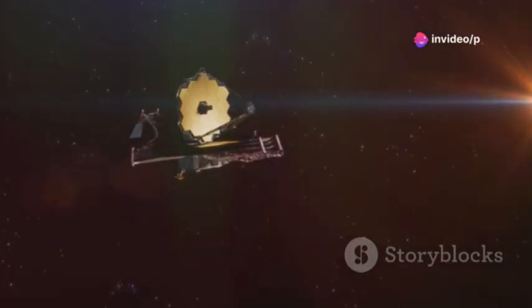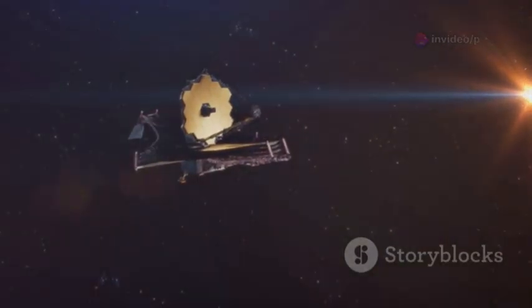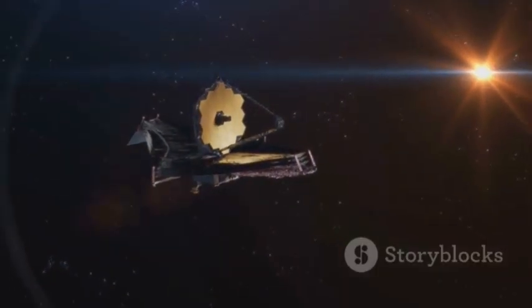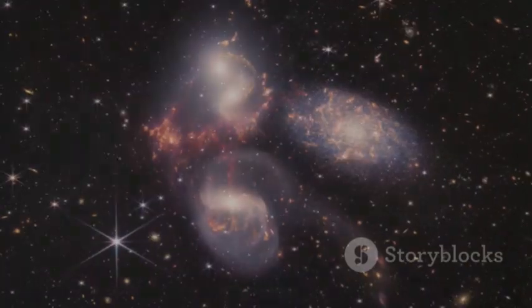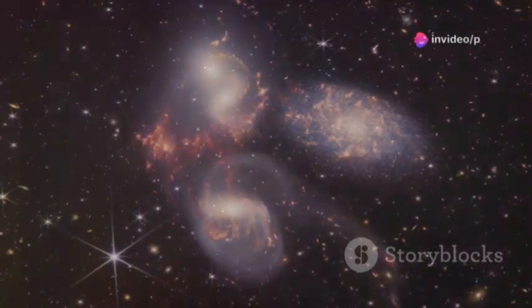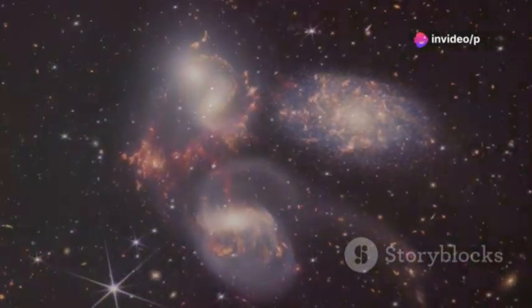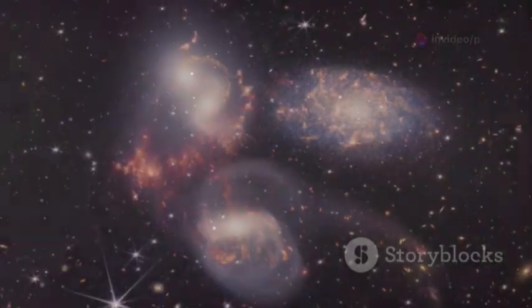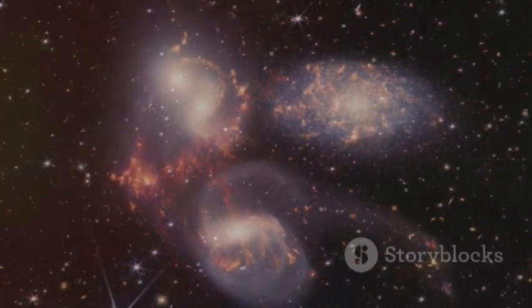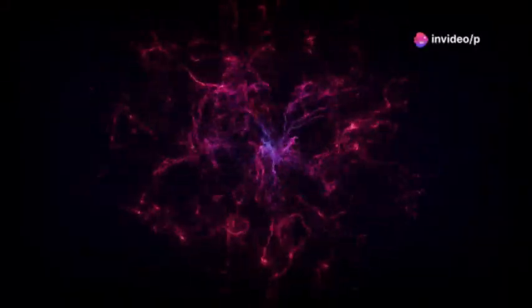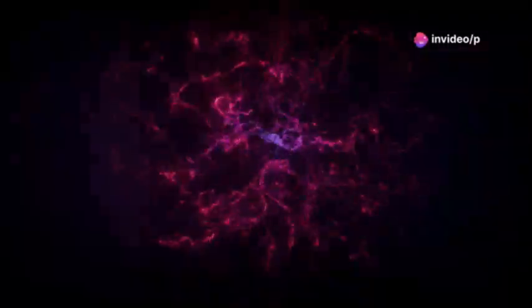Webb's massive mirror and ultra-sensitive instruments are specifically engineered to capture this faint, ancient glow, light that has traveled for billions of years across the cosmos. When Webb peers at these distant galaxies, it's not just seeing them as they are now, but as they were billions of years ago, offering us a glimpse into the universe's childhood. It's like a true time machine, capturing the universe's very first light after the long, dark cosmic ages, when the first stars and galaxies began to shine.